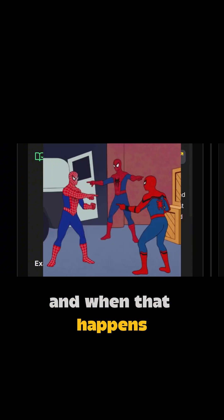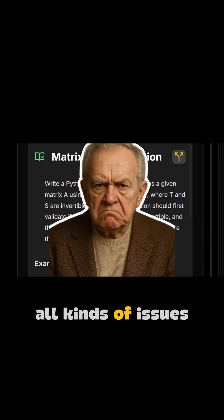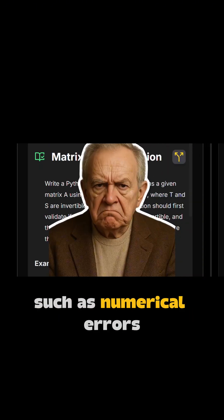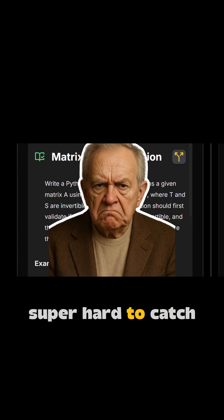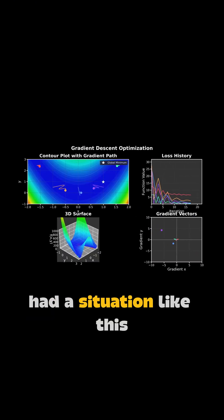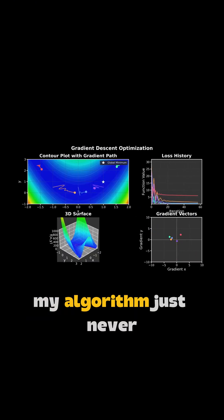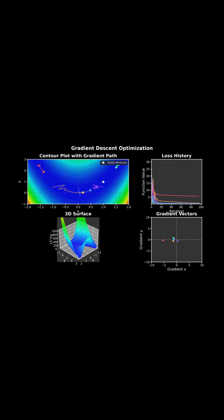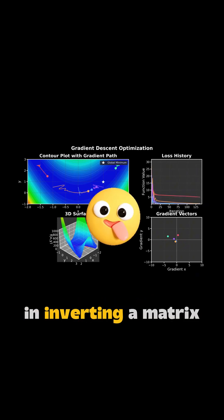And when that happens, inverting can cause all kinds of issues, such as numerical errors, which are super hard to catch. I actually had a situation like this where my algorithm just never converged because of a numerical issue in inverting a matrix.